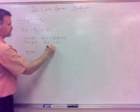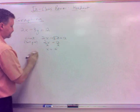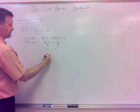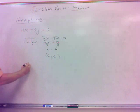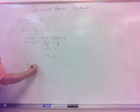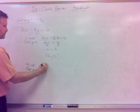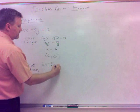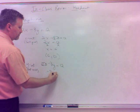For the x-intercept, I set y to be 0. So if I set y to be 0, I have 2x minus 3 times 0 equals 12, and so that's 2x, that's 0, it's just 2x equals 12. Divide by 2, and you've got x equals 6. So x-intercept-wise, I've got x is 6, and then the y is 0.